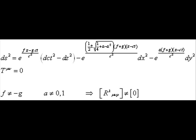As long as F is not equal to minus G, and A is not equal to zero or one, the spacetime curvature is not zero for this line element. That means that this is not a trivial solution to Einstein's field equations. This is not a mere frame transformation from the metric of special relativity.